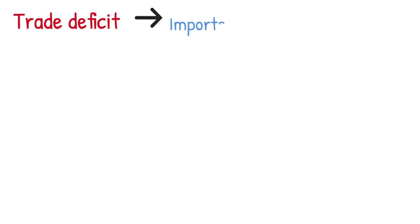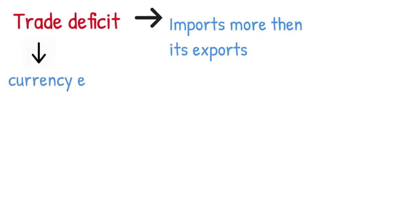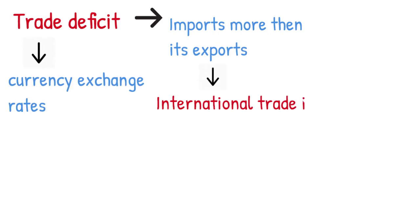The opposite of a trade surplus is a trade deficit. A trade deficit occurs when a country imports more than it exports. A trade deficit typically also has the opposite effect on currency exchange rates. When imports exceed exports, a country's currency demand in terms of international trade is lower. Lower demand for currency makes it less valuable in the international markets.